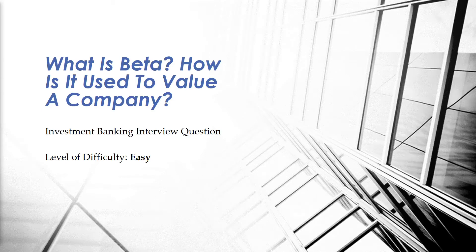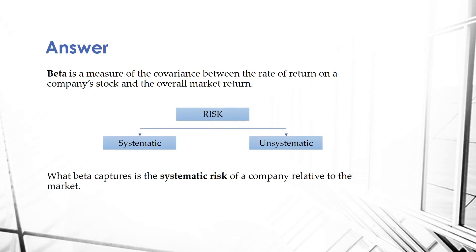What is beta and how is it used to value a company? Beta is a measure of the covariance between the rate of return on a company's stock and the overall market return.